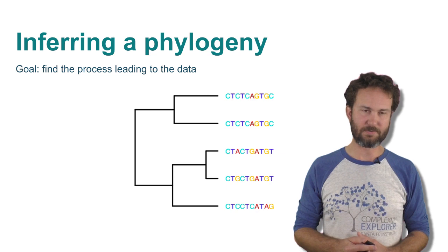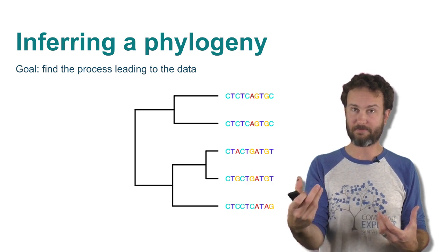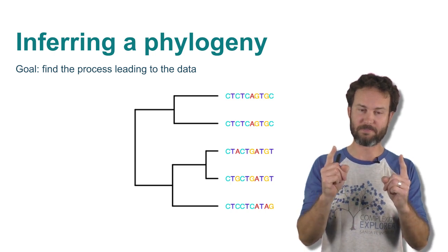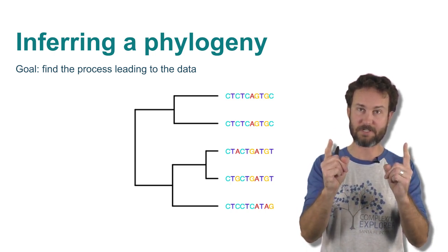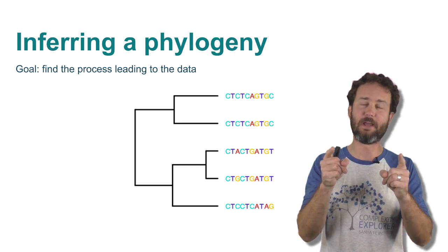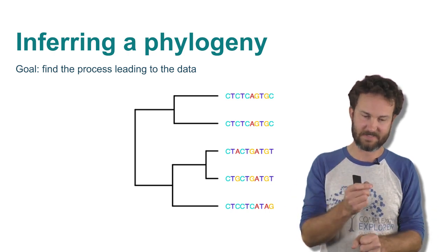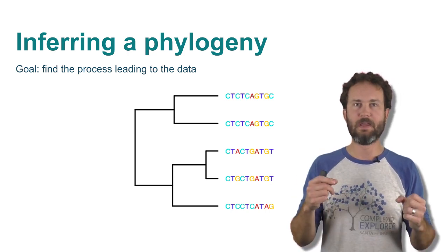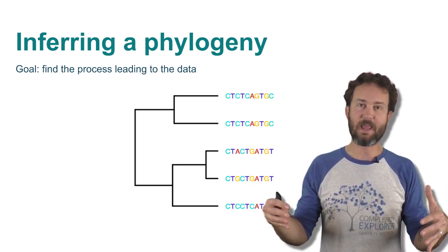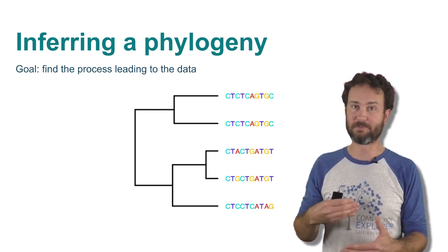The goal is to find the evolutionary process leading to the data we have. The data we have tends to be homologous regions of DNA. Homologous means this part of the genome of different organisms does the same thing, has the same function, and most importantly, has the same evolutionary origin — comparing the same region of genomes of different organisms. The process we're talking about is speciation, extinction, and the passing on of genetic information to daughter lineages from ancestral lineages.